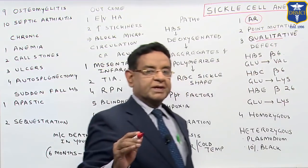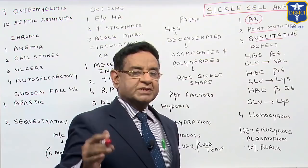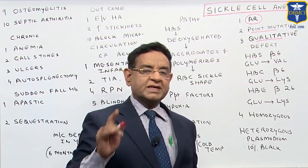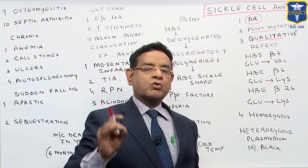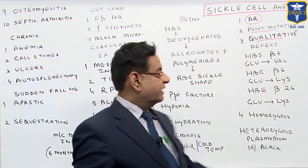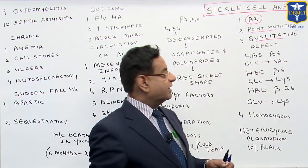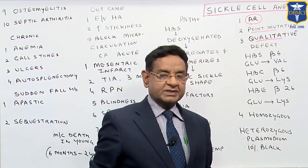Remember, in thalassemia there is also a problem of globin chain synthesis, but that is a quantitative defect, whereas here it is a qualitative defect.